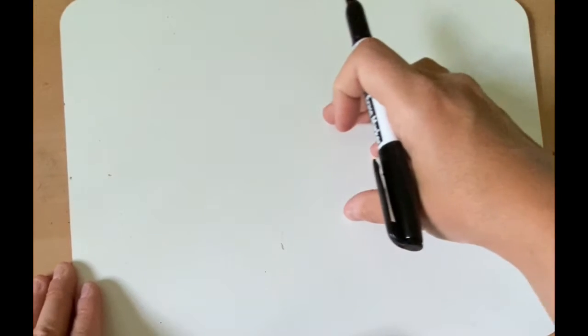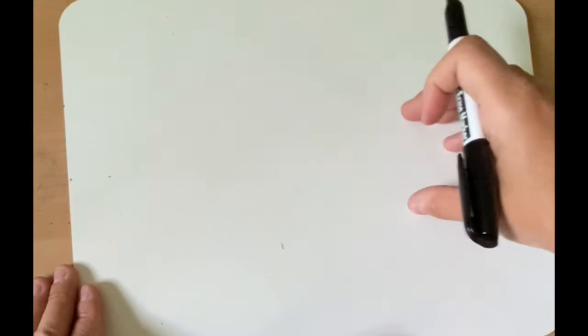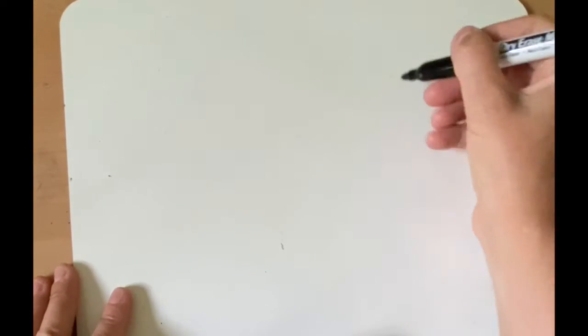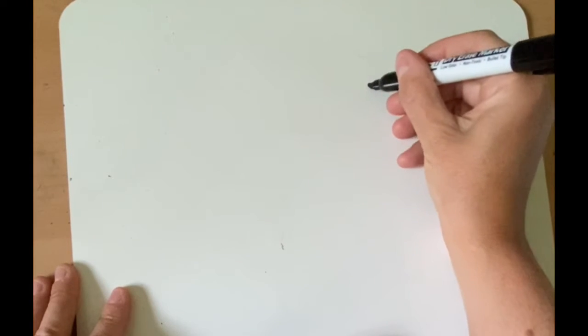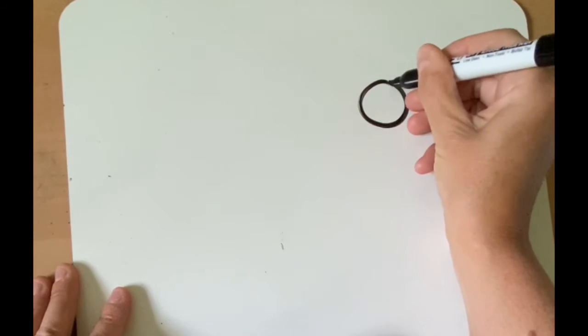So make sure you have a pencil and eraser because you're going to be erasing some marks. As an elephant walks on all fours, it's going to be horizontal. So I'm going to start the elephant's head over here and I'm going to make a circle.